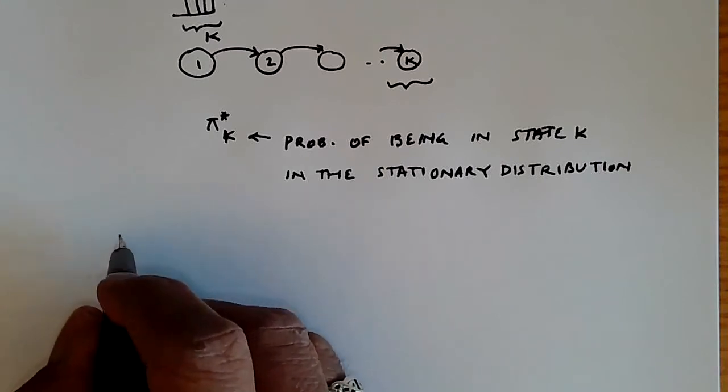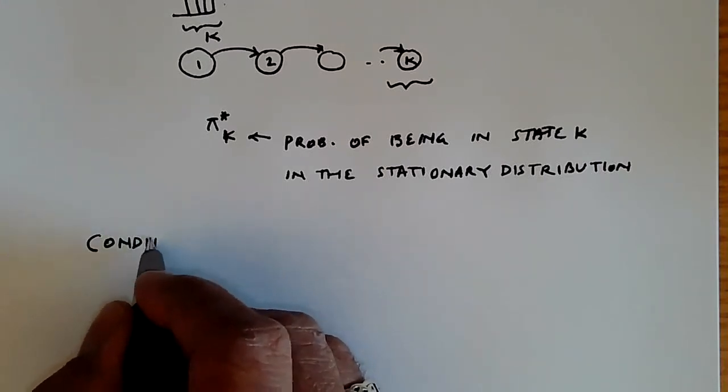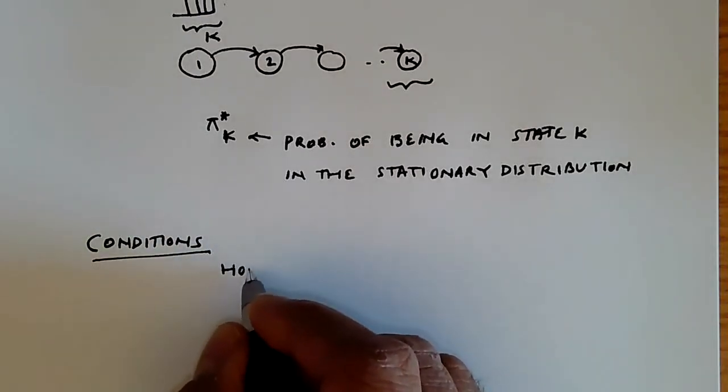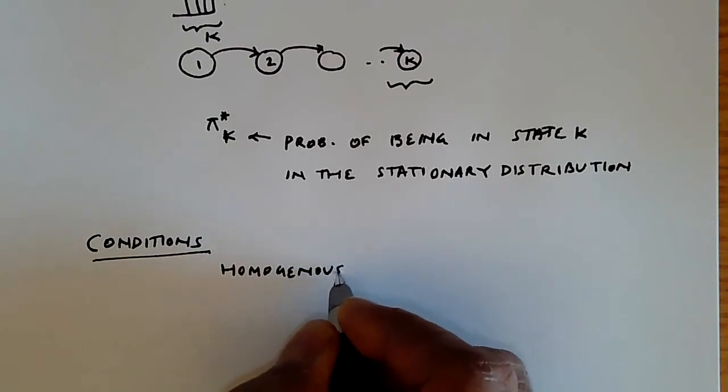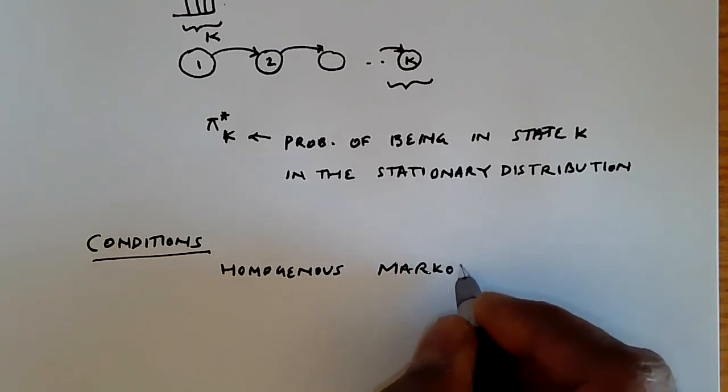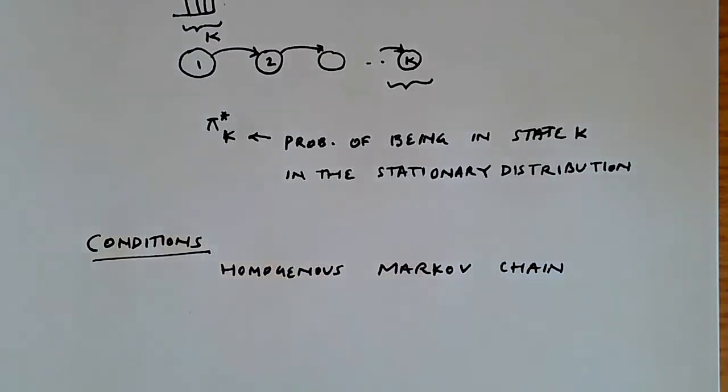So first we need to know the conditions. So the conditions are that we need to have a homogenous Markov chain. So that's just for starters. And if it's not homogenous, if it's not Markov, then we're out of luck.